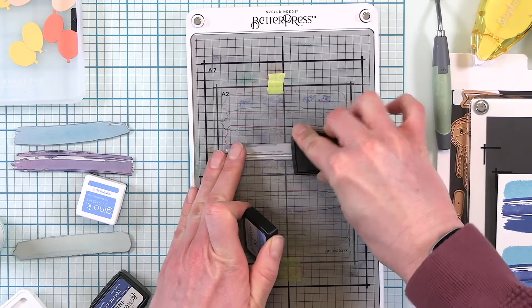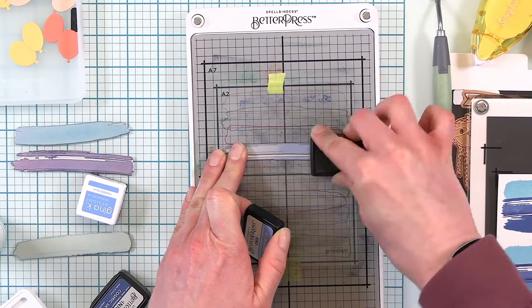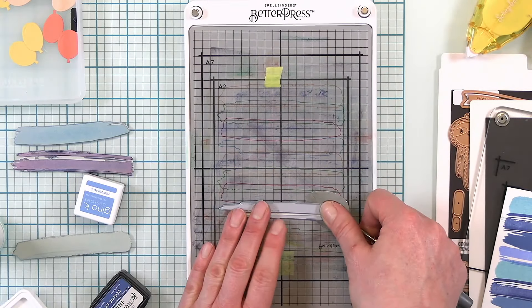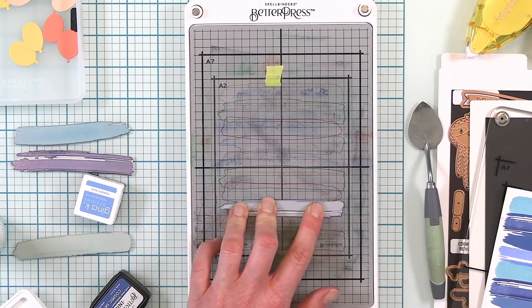Now I just have two empty spaces that I will fill with the fourth plate. For this one I'm using Better Press ink again in a different blue.